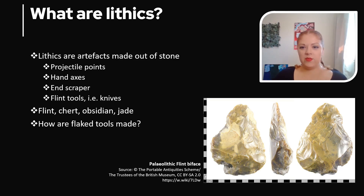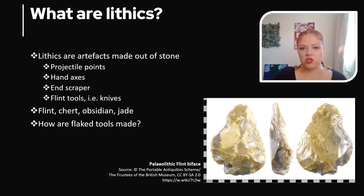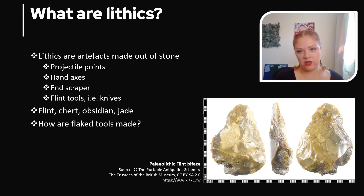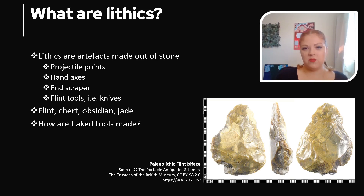So what are lithics? Lithics are artifacts made out of stone. They can include, but are certainly not limited to, projectile points, hand axes, end scrapers, and knives. They can be made out of materials like flint, as it's referred to here in the UK and Europe; chert, as it's more specifically referred to in North and South America; obsidian; and even sometimes jade.